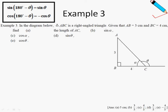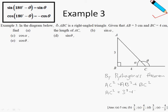In example number three, we have a slightly longer, potentially exam-style question. You have right-angled triangle ABC, with AB equal to 3 cm and BC equal to 4 cm, and you're asked to find AC. Applying Pythagoras' theorem: AC squared equals AB squared plus BC squared, which is 3 squared plus 4 squared, so AC equals 5 centimetres.